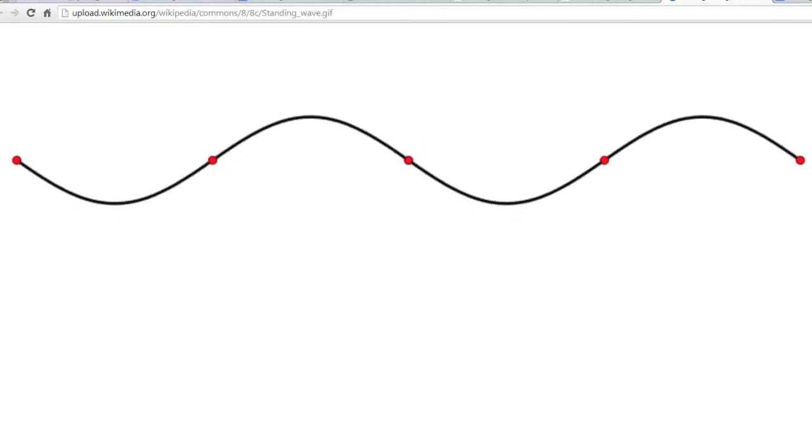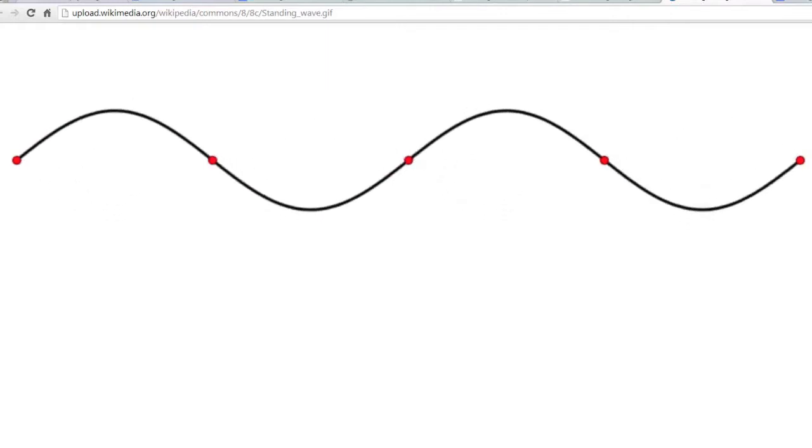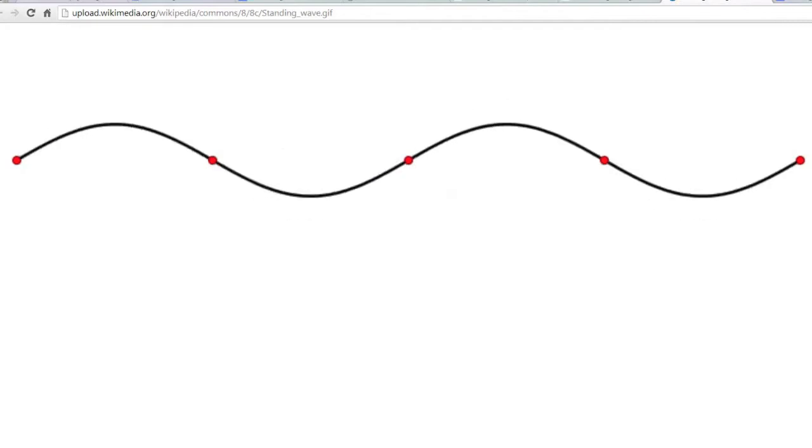This is an example of a standing wave in a stationary medium. The red dots represent wave nodes. This wave is in fourth mode. Notice that the points colored in red are always stationary.